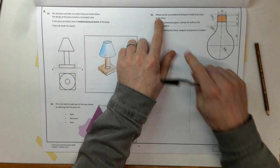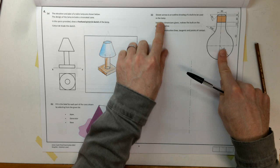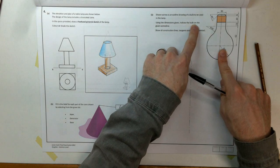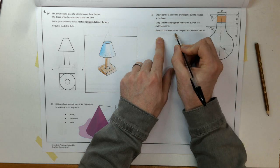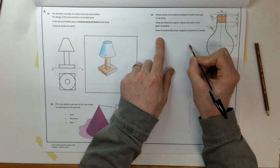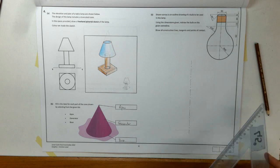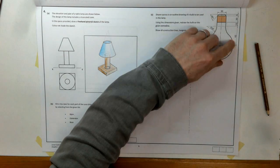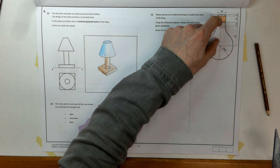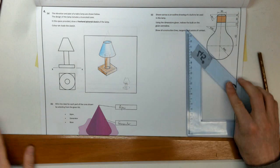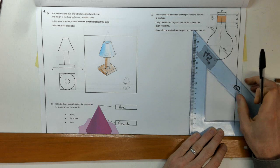On to part C. Shown across is the outline drawing of a bulb to be used in the lamp. So here's our bulb. Using the given dimension, redraw the bulb on the given centre lines. Show all construction lines, tangents and points of contact. So we have to show all our constructions here. I'm going to start off by stepping off along that centre line. I'm going to measure off all these distances, starting at the base of 45 to the centre and 62, 25, 45, 62.